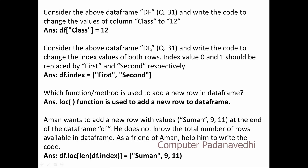Consider the above DataFrame DF and write the code to change the index values of both rows. Index values 0 and 1 should be replaced by 'first' and 'second' respectively. If we choose to change the default index, we select index ['first', 'second']. df.index is equal to ['first', 'second'].